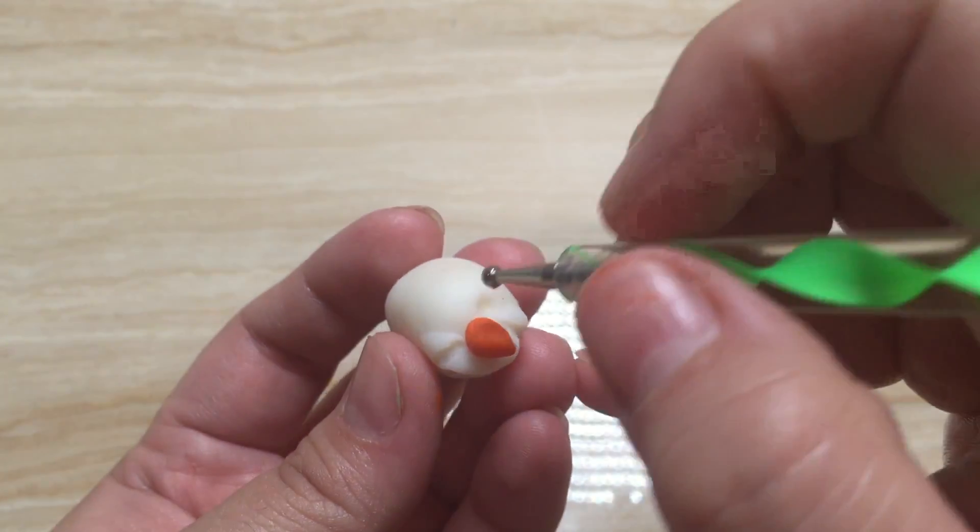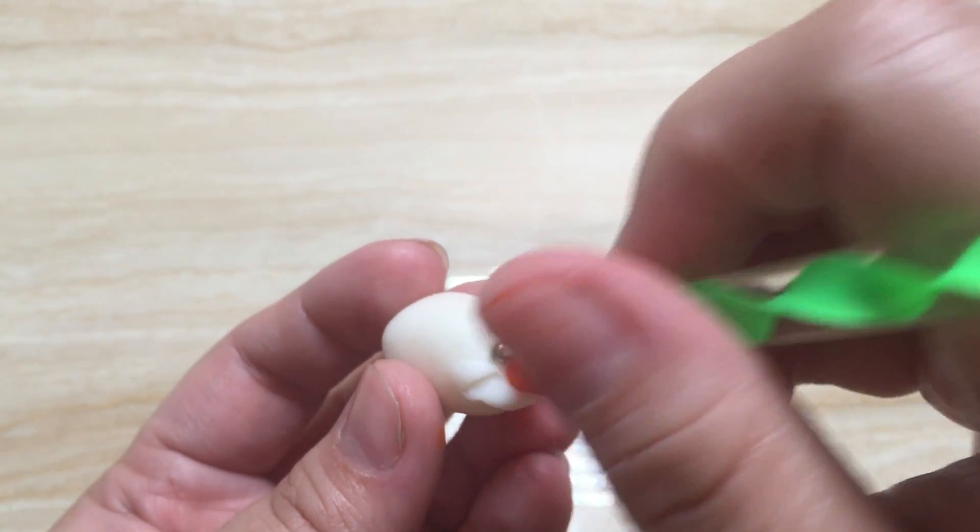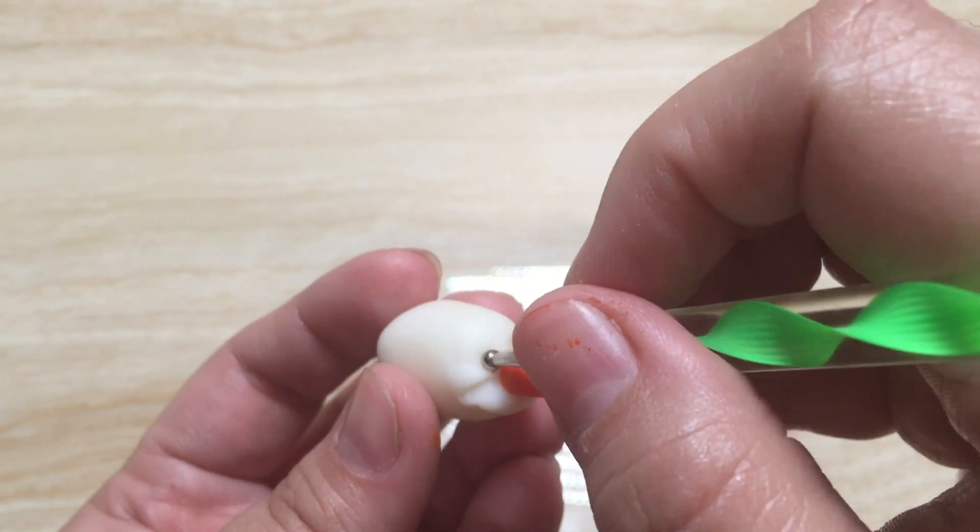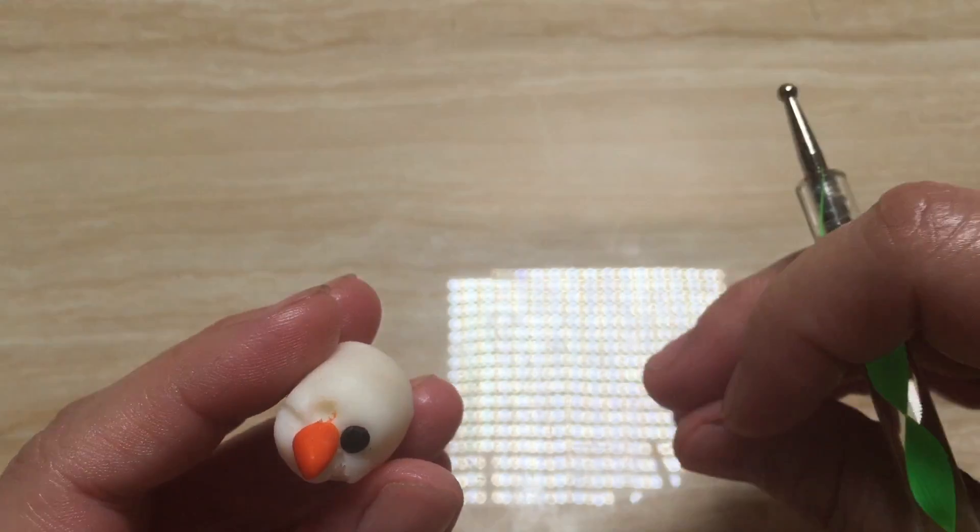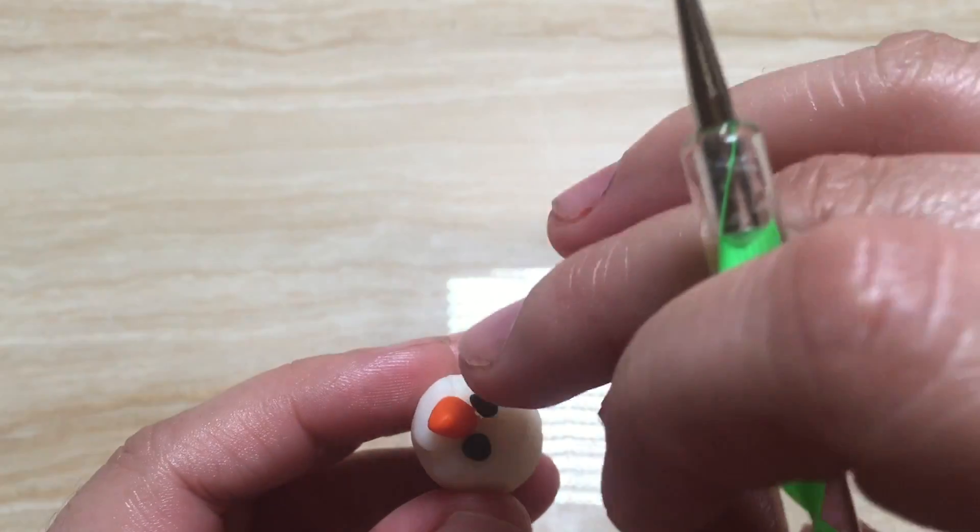Poke some holes for the eyes. Attach his eyes and flatten them out with your dotting tool.